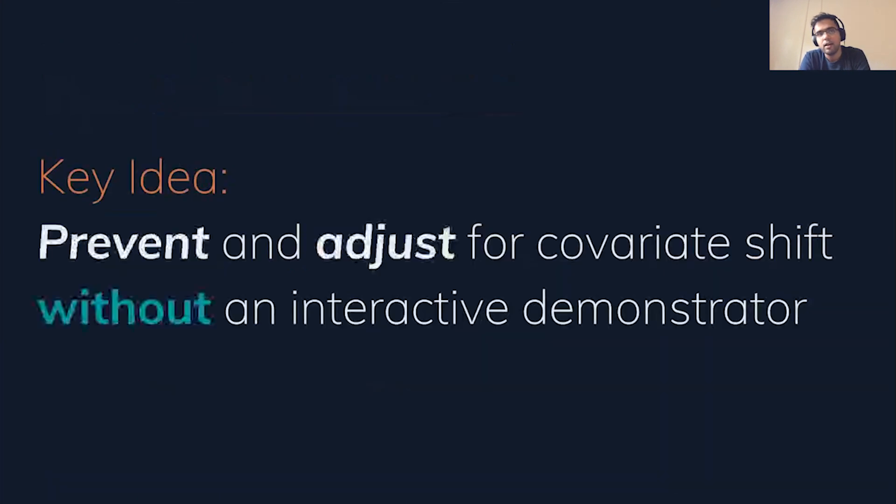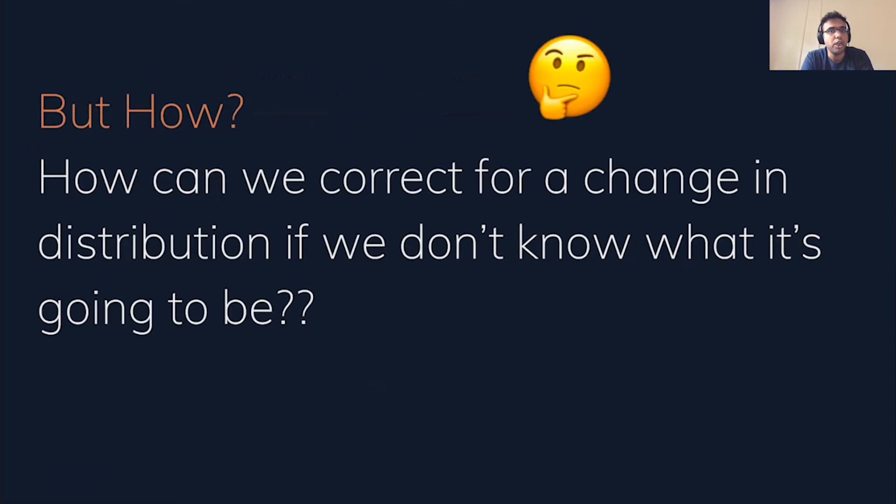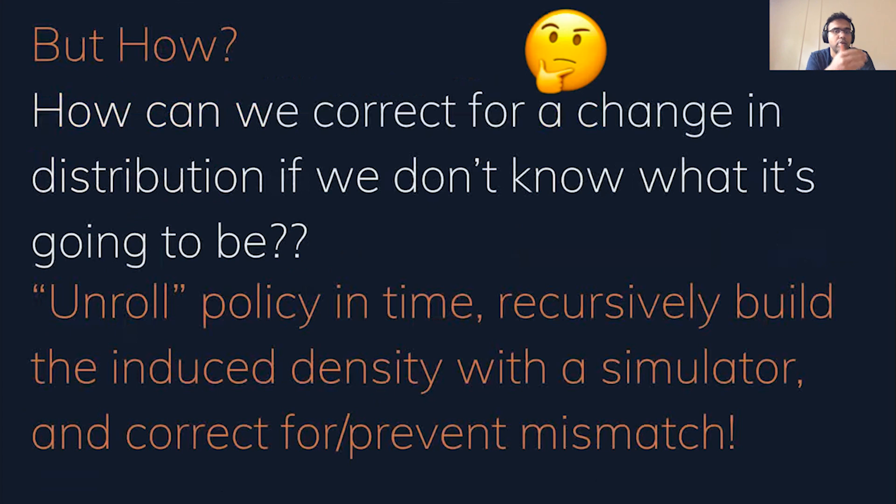Okay, so this is a key idea. Prevent and adjust for covariate shift without needing to query an interactive demonstrator. How do we correct for the change in distribution if we don't know what that distribution is going to be? This is where the simulator comes in. We unroll the learner forward in time, use the simulator to recursively build the induced density, and then correct for or try to prevent distribution mismatch.